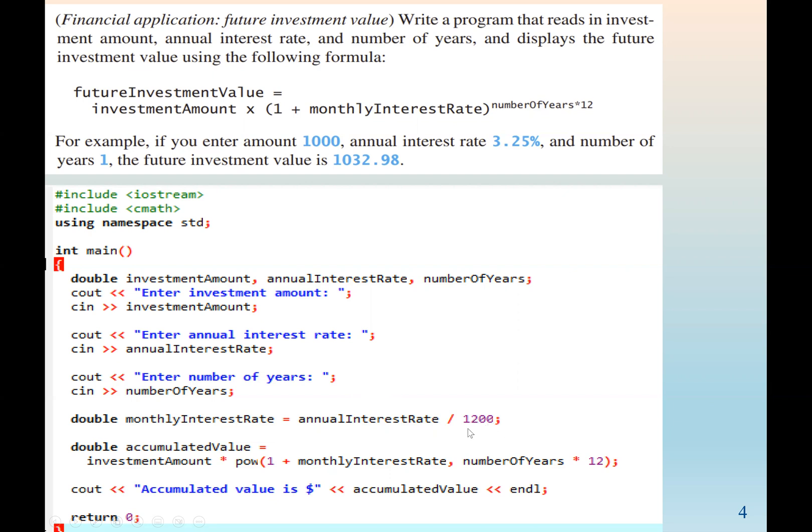The reason we are dividing by 1200, because the value we enter for the annual interest rate will be in percentage. We know 12 months is one year, so we divide by 12 and then by 100 also to change it from percentage to decimal. Then from there, we can plug in the value. Investment amount times the power of 1 plus monthly interest rate and also the number of years times 12. That's the formula given here.